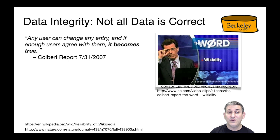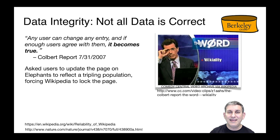To make his point, Colbert said on his TV show that there were too many elephants in Africa and asked viewers to reflect a tripling population on the Wikipedia page for elephants. Many of his viewers did this as a joke, and Wikipedia actually had to lock down the elephant page to avoid it being filled with false information. He later had Jimmy Wales, the founder of Wikipedia, on the show to discuss these phenomena — it was both funny and thought-provoking.